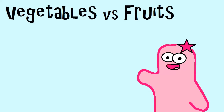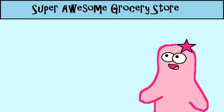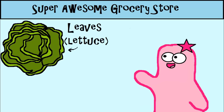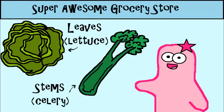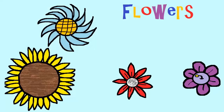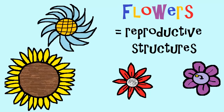The term vegetable really isn't used as a true biology definition. A lot of what grocery stores classify as vegetables are other structures of plants—like leaves, think of lettuce, or stems, think of celery. Sometimes grocery stores just classify vegetables as plant structures that are generally not as sweet. So angiosperms have flowers, and these are the reproductive structures.